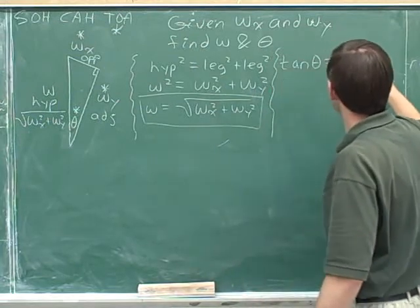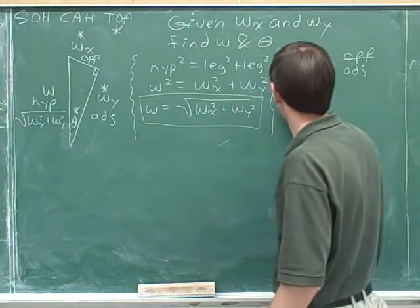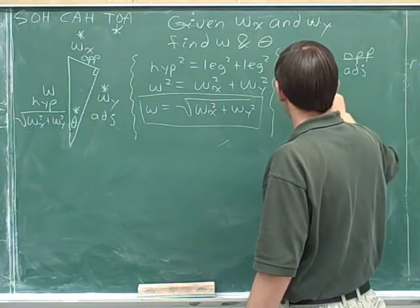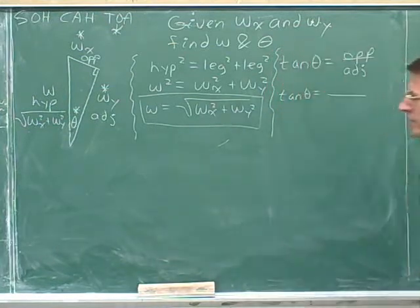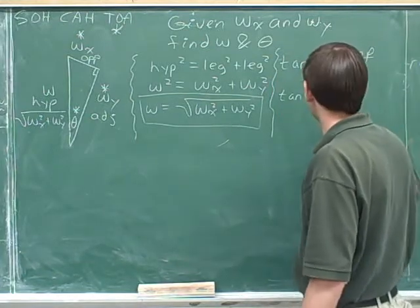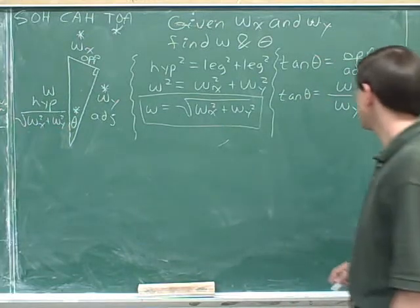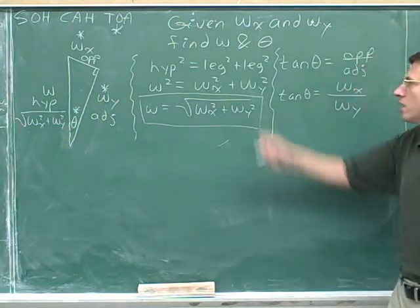Tangent of theta, toa, opposite over adjacent. After writing the general formula, we can plug in. The opposite side was w sub x and the adjacent side was w sub y.